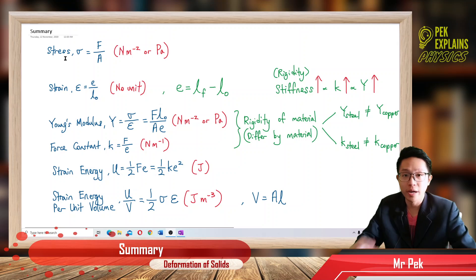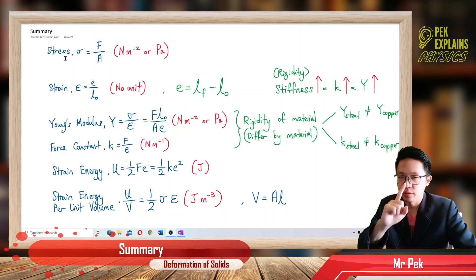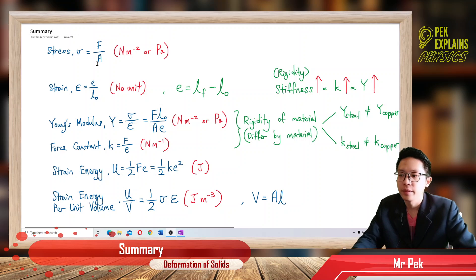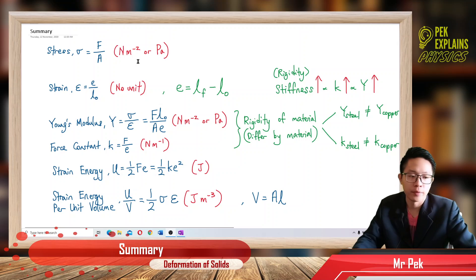Stress is when a wire or a steel rod is being pulled by a certain force, so the wire will experience a stress. Stress is force over cross-sectional area. Force is Newton, area is meter square, so force over area is Newton per meter square or Pascal. So stress, the symbol is sigma, it has the unit Newton per meter square or Pascal.